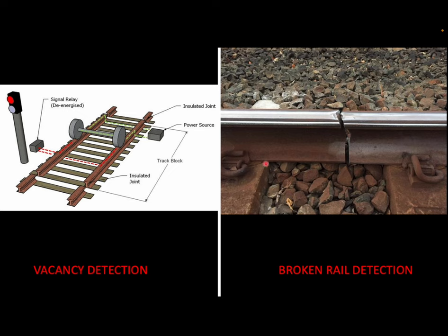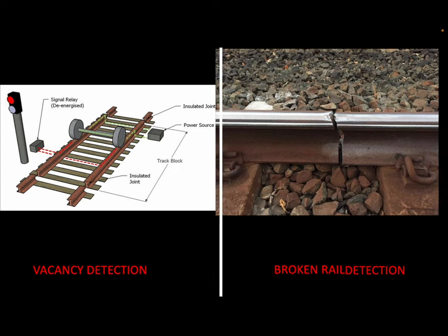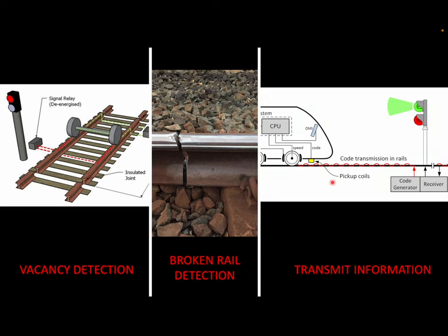So those have been predominantly the functions of AC and DC track circuits. But on top of that, what coded track circuits are able to do is also transmit information to the train — not only vacancy detection and broken rail detection, but also transmitting information to the train.